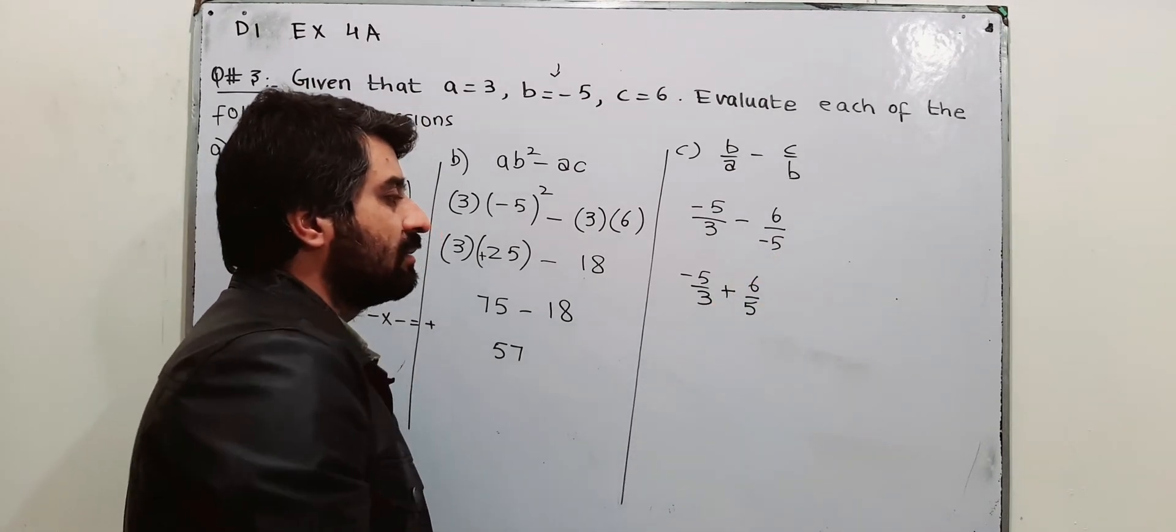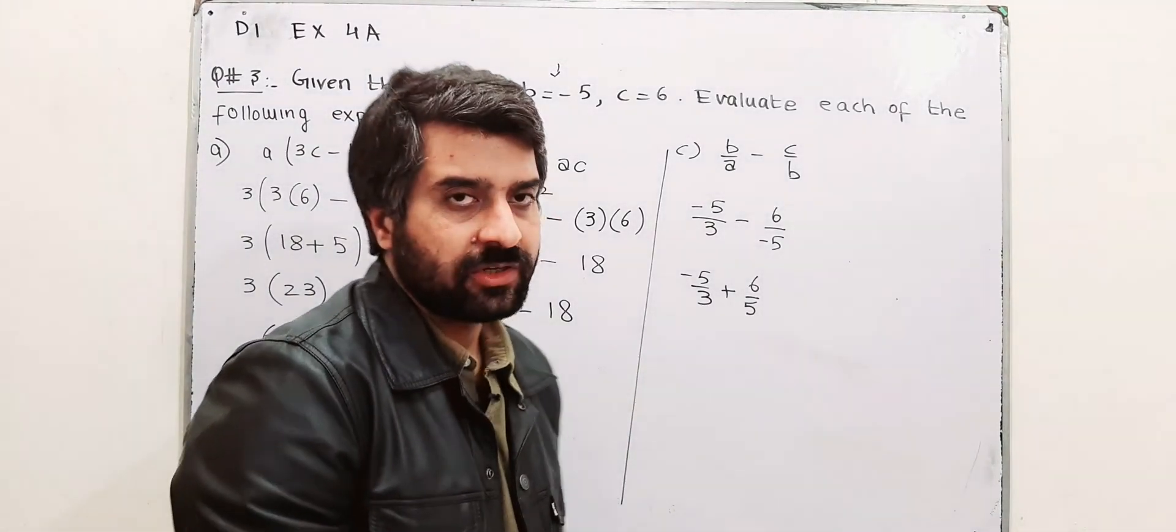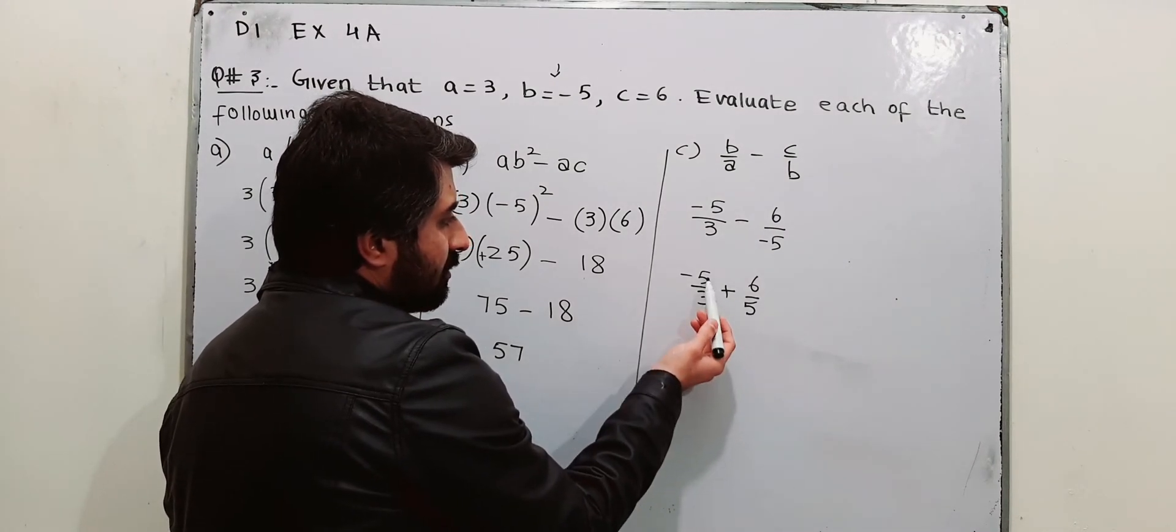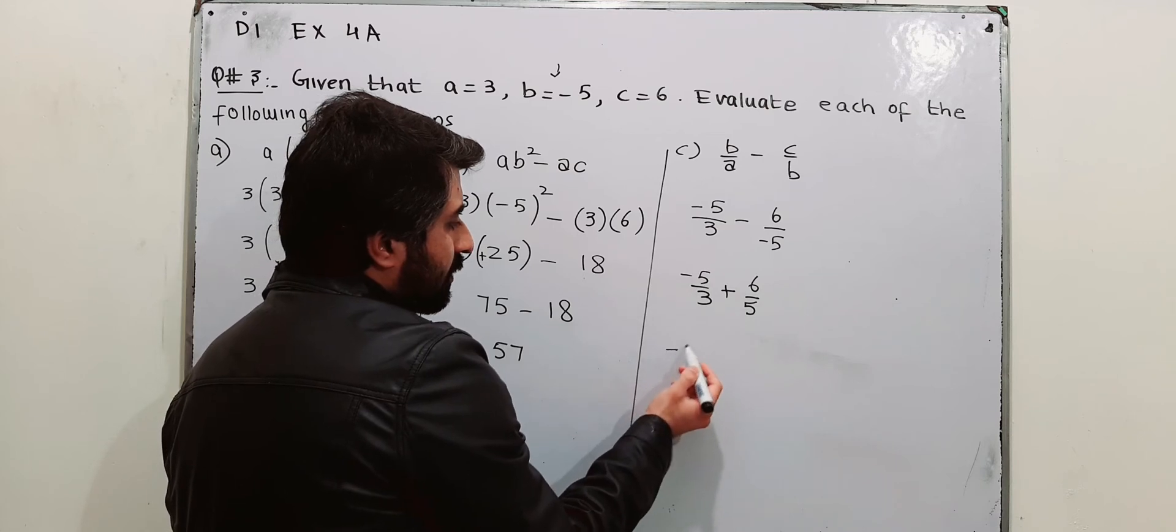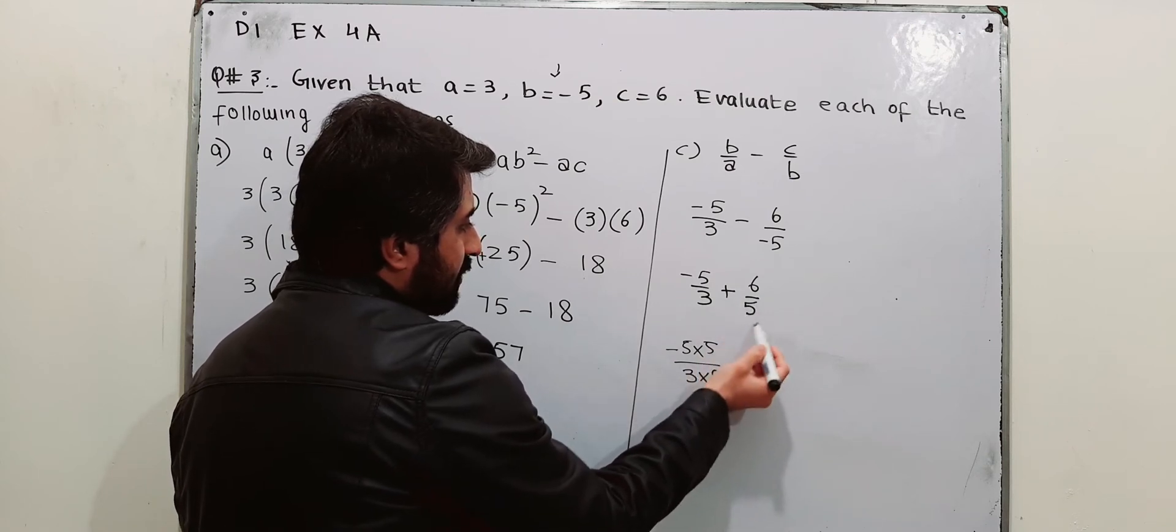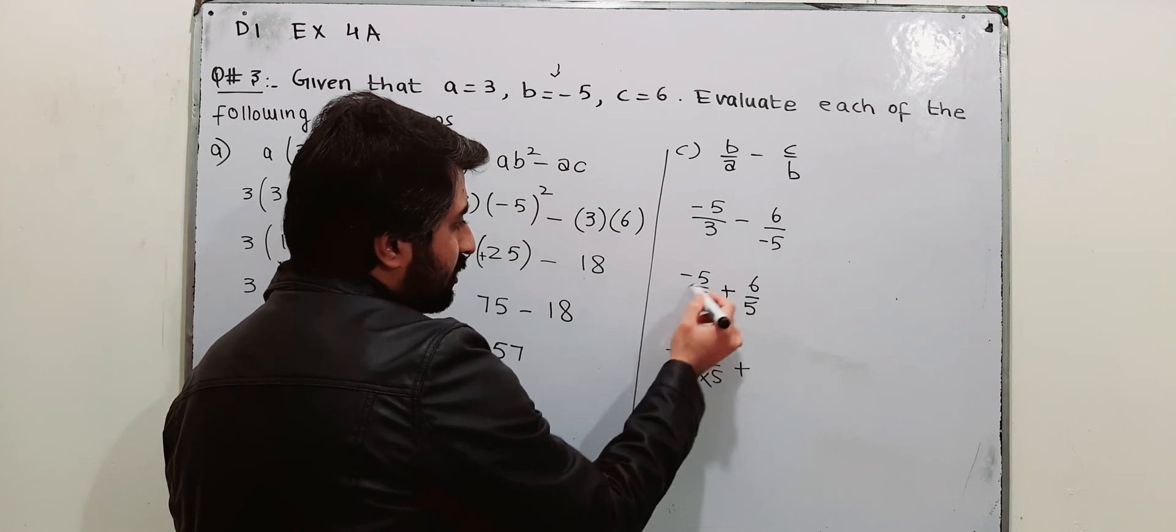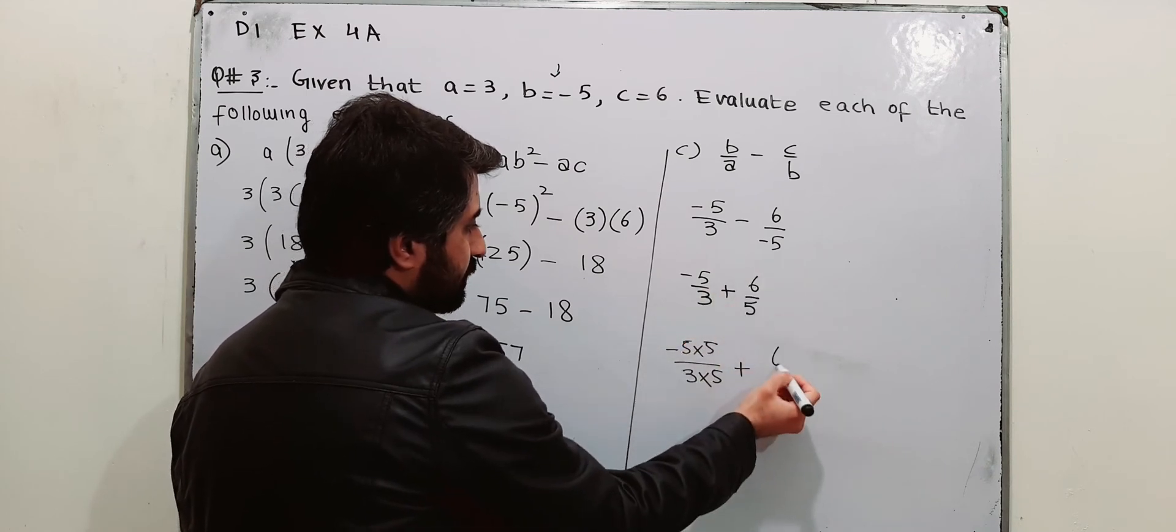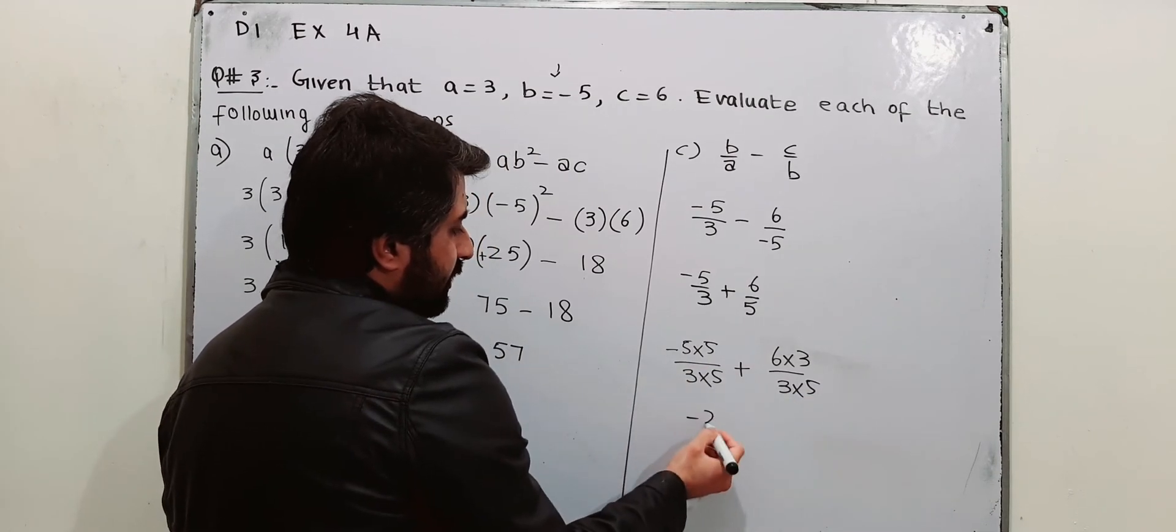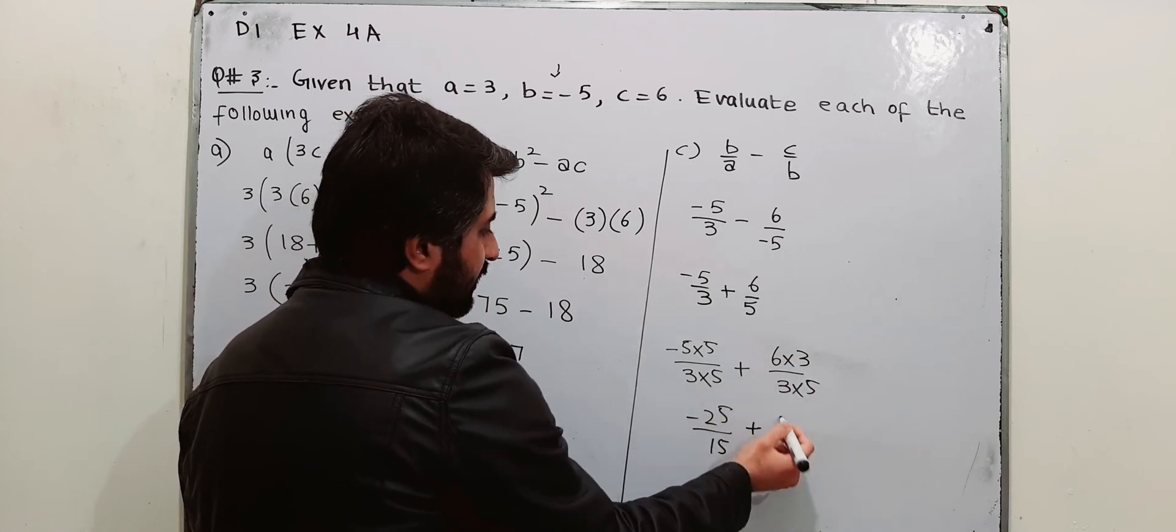When you have to take the LCM, the best way is to make the denominators same. You can multiply this 5 with this fraction. In order to make the denominator same, multiply this 5 in the denominator with this fraction. And this 3, the denominator with this fraction. You will have the same denominator then. Minus 5 into 5 minus 25. 5 into 3, 15. 6, 3 times 18. 5, 3 times 15.